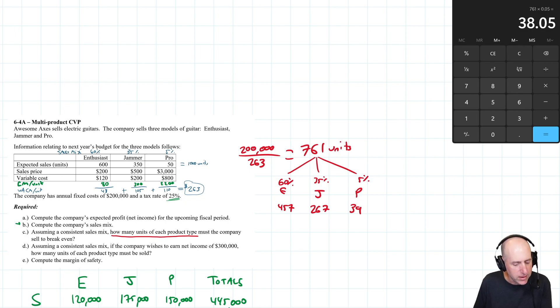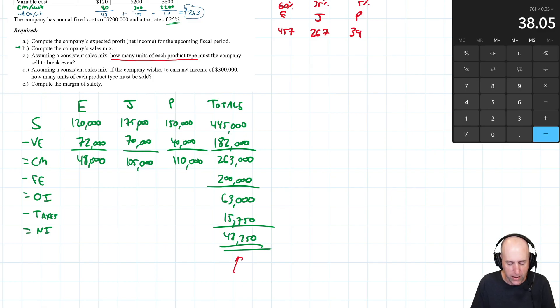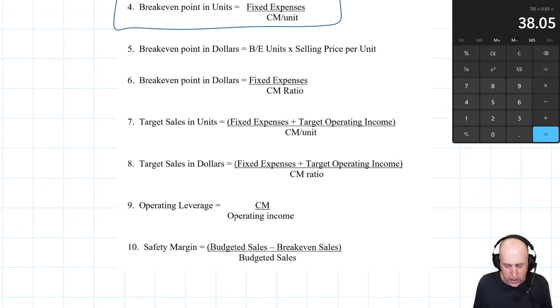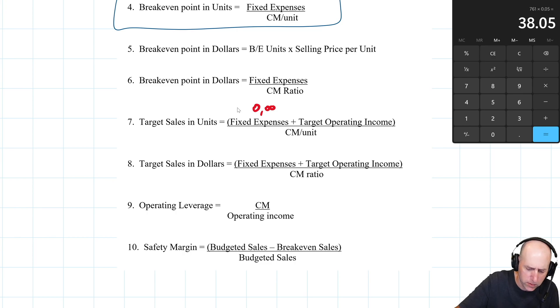Part D: Assuming a consistent sales mix, if the company wishes to earn net income of 300,000, how many units of each product type must be sold? We're expecting to make income of 47,000, so we're going to sell a lot more units than planned if we want to make 300,000. The formula is fixed expenses plus target operating income divided by CM per unit. Fixed expenses were 200,000.